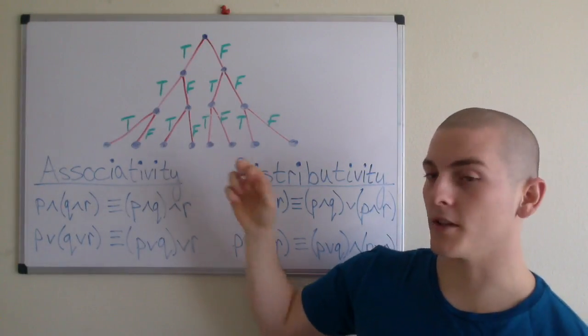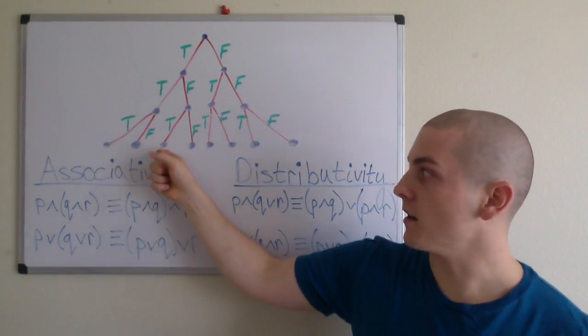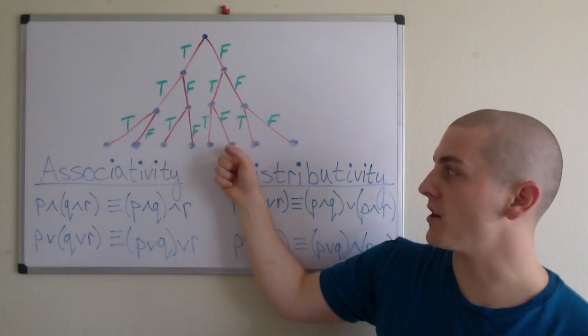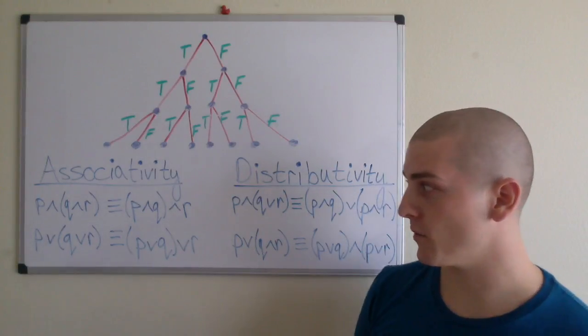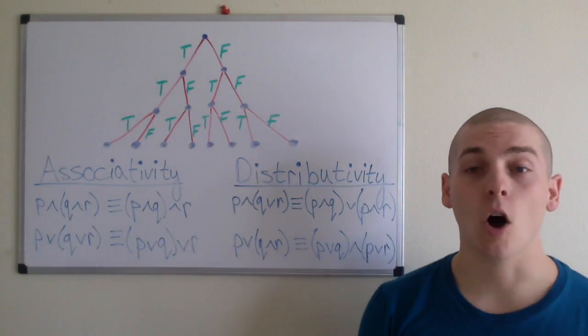Now we're going to take this a step further and we're going to have eight possible outcomes for our true or false path, because we're dealing with three propositions: P, Q, and R.